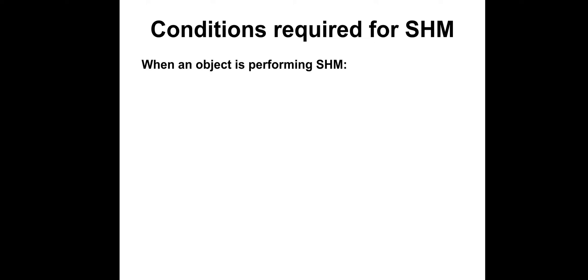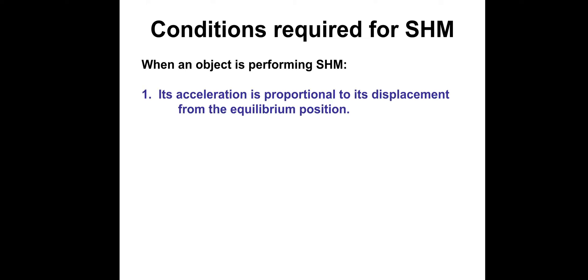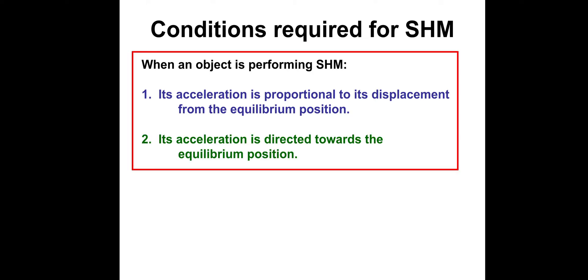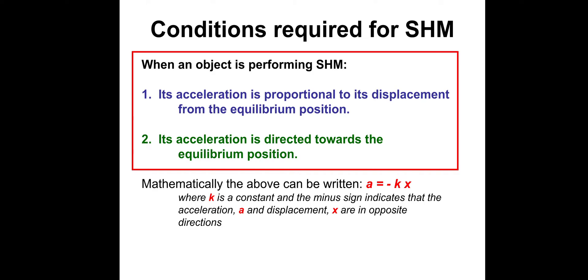So the conditions required for SHM: when an object is performing simple harmonic motion, its acceleration is proportional to its displacement from the equilibrium position — acceleration is proportional to x. And its acceleration is directed towards the equilibrium position. Mathematically, it can be written as: acceleration = −kx, where k is a constant. The minus sign indicates that the acceleration and displacement are always acting in opposite directions.